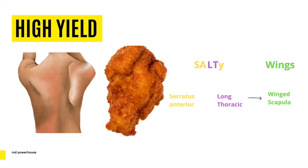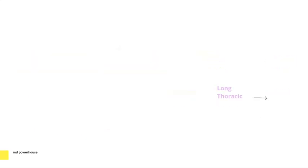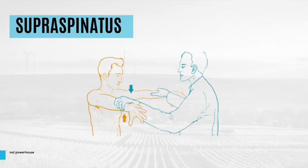To test the supraspinatus, you can perform the empty can test, which is shown in this image. If this test elicits pain, that is a positive result and the supraspinatus is more than likely injured.